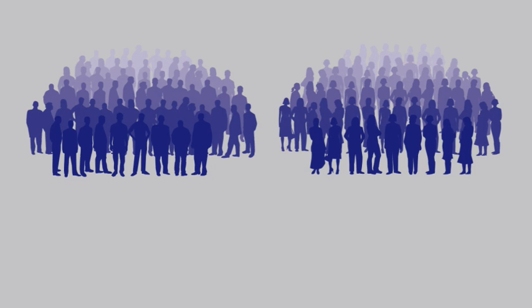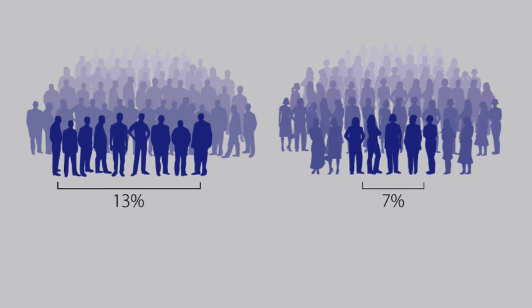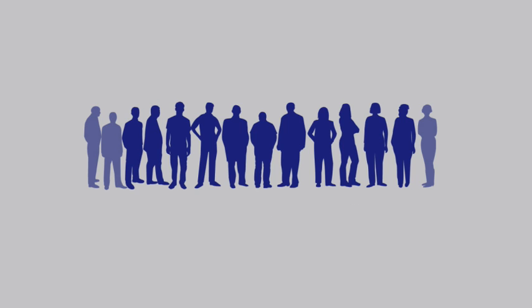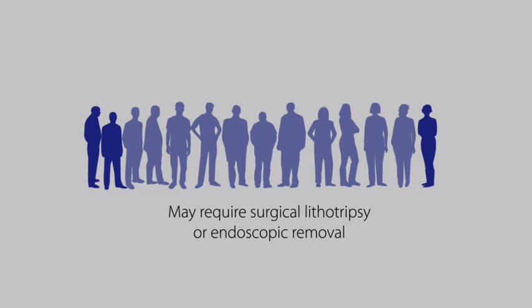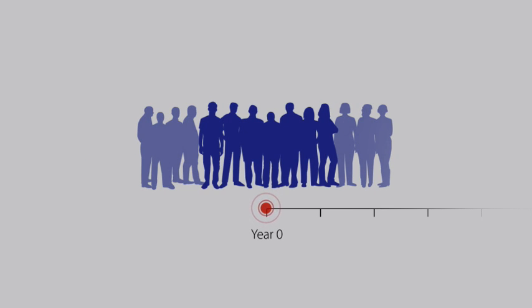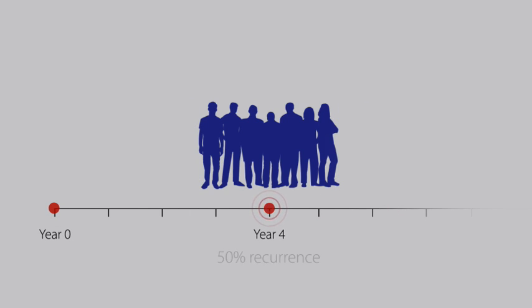In the U.S., it is estimated that 13% of men and 7% of women will develop a kidney stone during their lifetime. Fortunately, in about 78% of these patients, stones will be expelled spontaneously. But stones that become lodged in the ureter may require lithotripsy, or percutaneous or endoscopic removal. It's important to note that nearly half of all first-time stone formers will have another stone episode within the next four years. Recurrent stone formers are at even greater risk, and may form a new stone every two or three years.